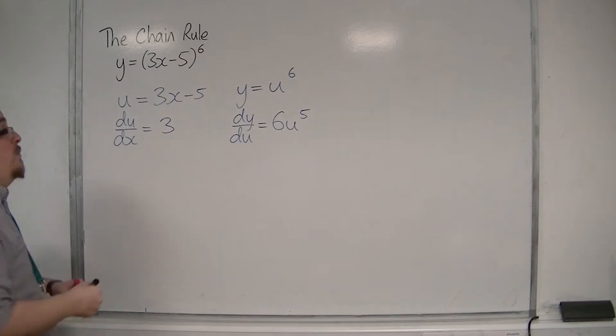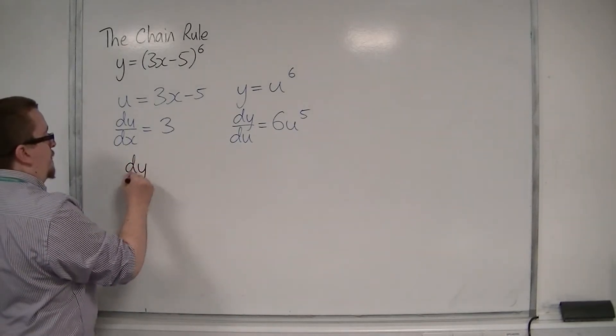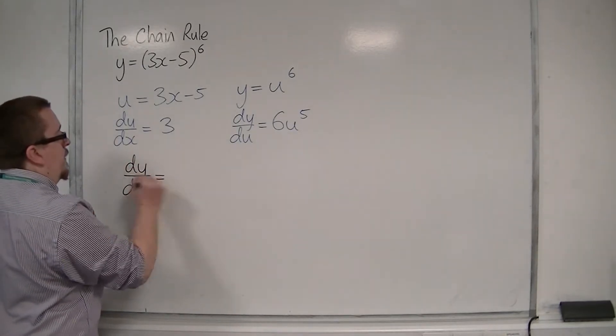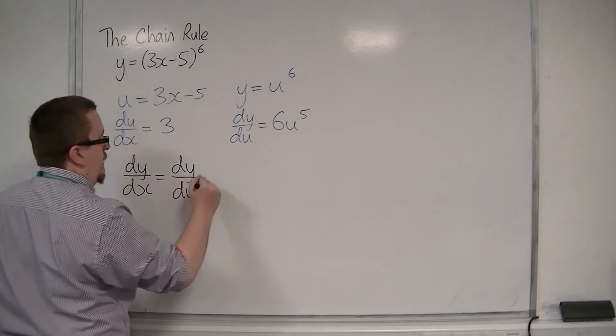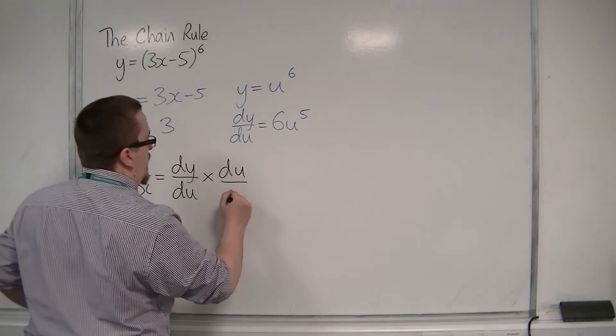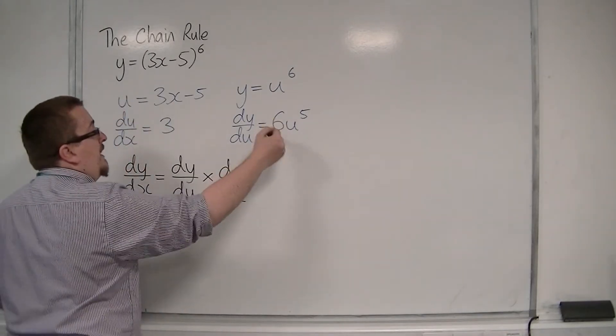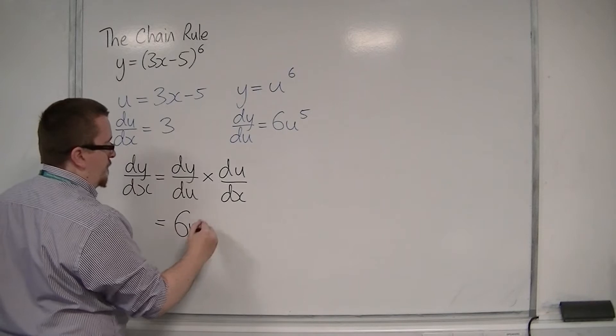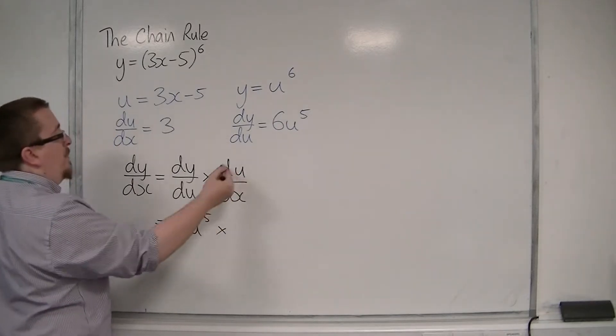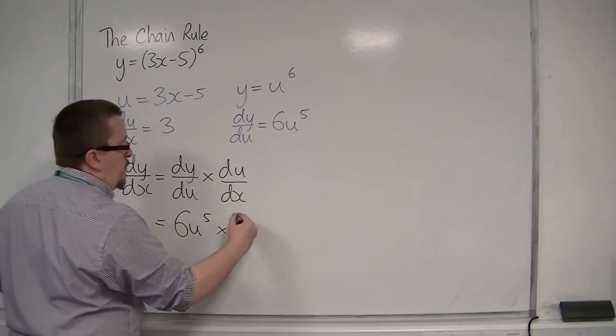So dy by dx is dy by du times du by dx. So this is 6u to the 5 times du by dx, which is 3.